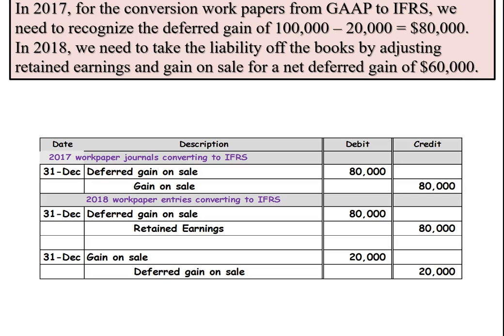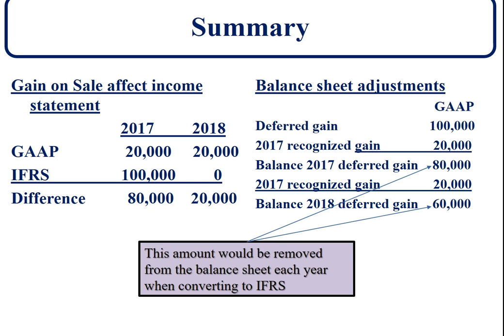In summary, on the income statement side, we have a difference of $80,000 to account for in 2017 when going from GAAP to the international standard, and in 2018 we have to take that $20,000 gain off the books. On the balance sheet, we take the $80,000 deferred gain off at the end of 2017, and the balance of $60,000 off at the end of 2018. This concludes the presentation on the differences in gain on sale with leaseback, operating lease, between GAAP and the international standard.